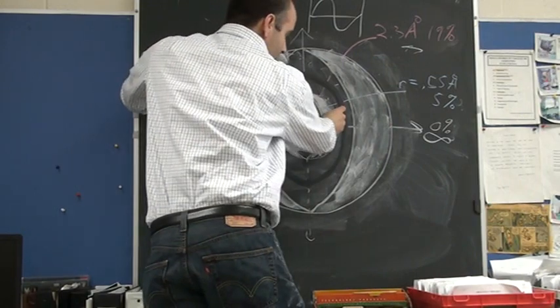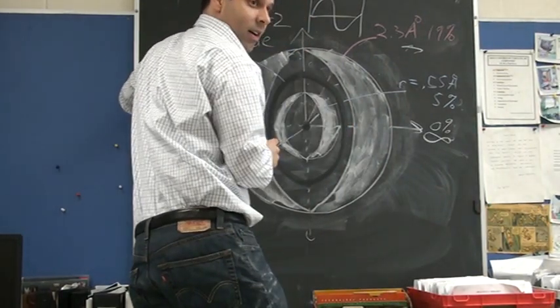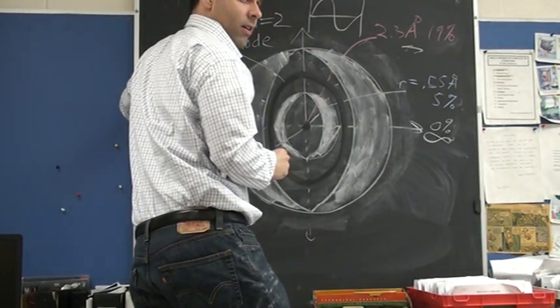So how does the electron go from here to there without going through there? Because if it goes through there, then there should be a small chance that I can find it there. Right?